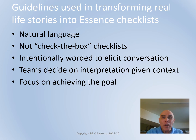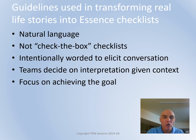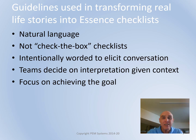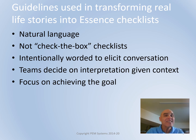Let me share a few guidelines we used in transforming those real-world stories into essence checklists. First, natural language — we didn't want to introduce any new terms, only terms that software developers would already be familiar with. They're not check-the-box checklists; they were intentionally worded to elicit conversation. For example, phrases like 'agreed to' and 'sufficiently' prompt teams to ask: agreed to by whom? What does sufficiently mean? The answer depends on your context — teams need to decide. We also focused on writing checklists that get the team thinking about the goal, requiring genuine thought process.